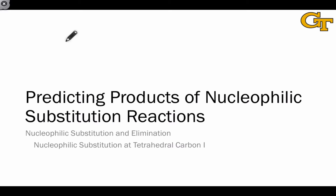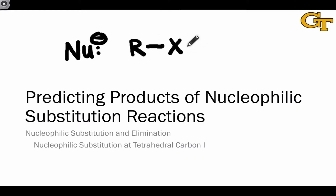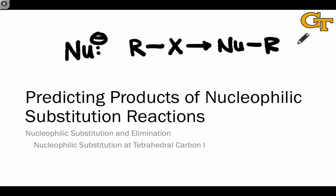Here we're going to discuss predicting the products of simple nucleophilic substitution reactions. This really comes down to identifying three key components: the nucleophile, the electrophilic atom (or electron-accepting atom), and the leaving group. As long as we can do this and understand the nature of nucleophilic substitution, it's straightforward to draw the products.